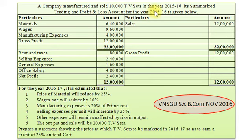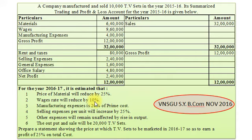We will prepare a Cost Sheet for the Financial Year 2015-16. For the year 2016-17, here are the estimations: Material price reduced by 25%, meaning our material price will be 25% less compared to 2015-16. Wages rate will reduce by 10% — same way, wages rate of 2016-17 will be 10% less compared to 2015-16. Manufacturing expense is 20% of prime cost. Selling expense per unit will increase by 25%. And other expenses will remain unaffected by rise in output.